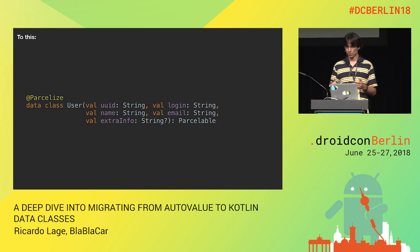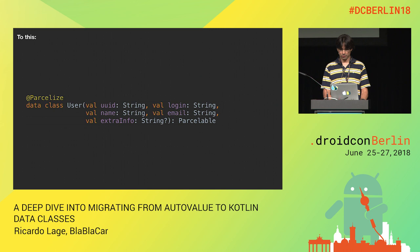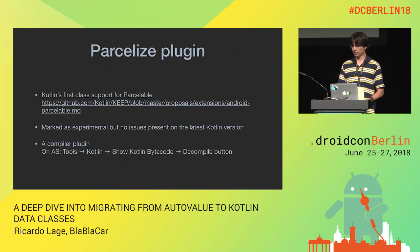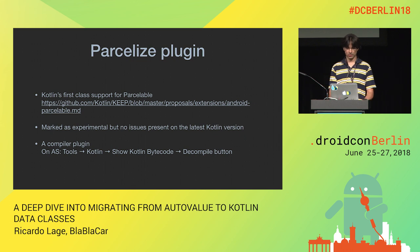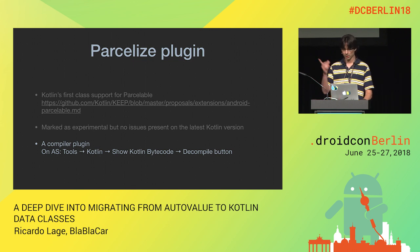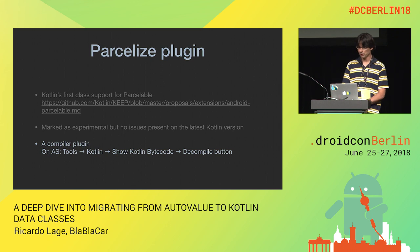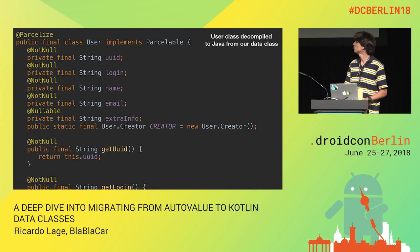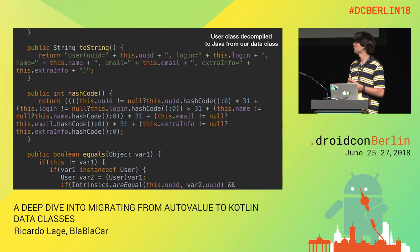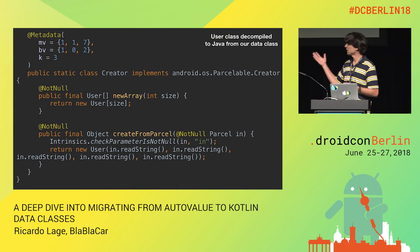This is not to say AutoValue is bad — it's very good for Java. But if you're moving to Kotlin, data classes offer a much better way to achieve the same result. We are also using the Parcelize plugin, which is Kotlin's answer to Parcelable implementation. Importantly, this is a compiler plugin with no annotation processing. You can verify this in Android Studio by showing the Kotlin bytecode and decompiling — you'll see all the null checks, equals, hashCode, and Parcelable implementation generated at compile time.